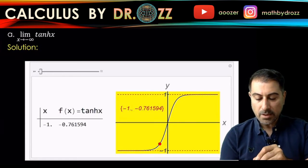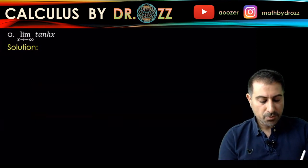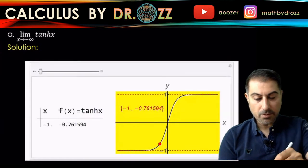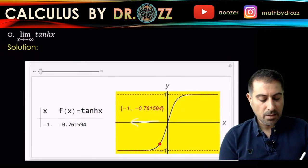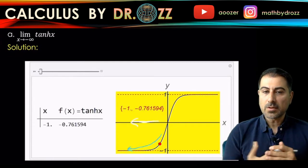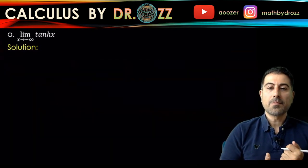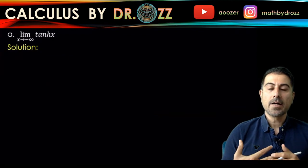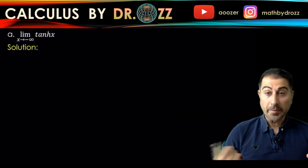You can just see how the function behaves as x approaches negative infinity. So essentially, as x approaches negative infinity, the corresponding function values tend to negative one. But we should be able to prove that algebraically.